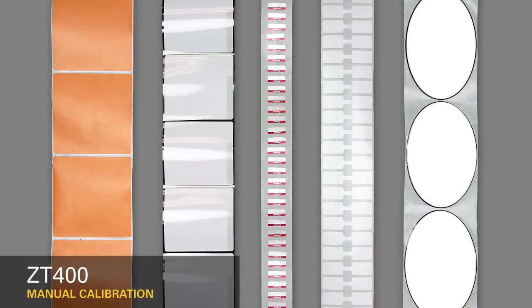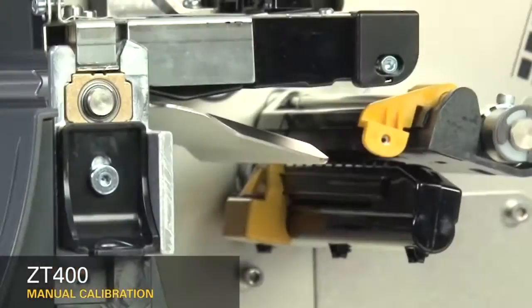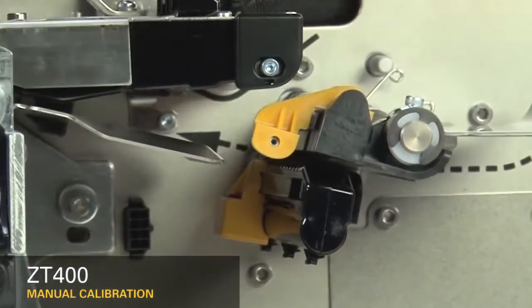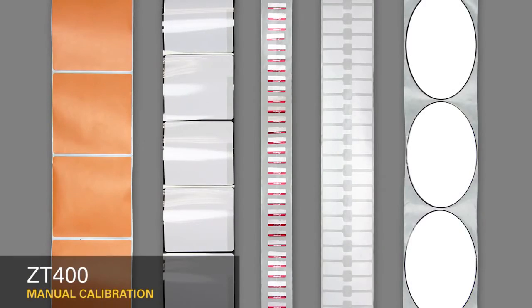In order to place the image in the correct position on the media, you must first identify the features in the media you'd like the printer to detect. Second, you must make sure the sensors in your printer are set up to detect those features. Most media contains features that identify the start position.